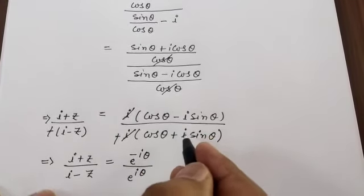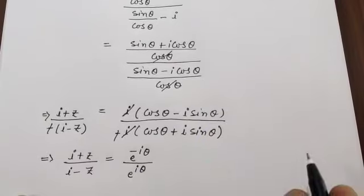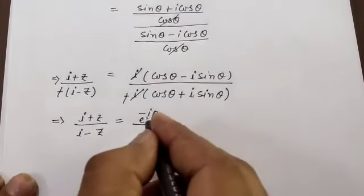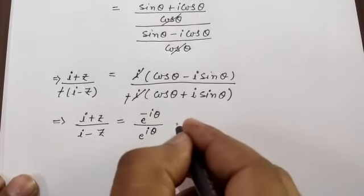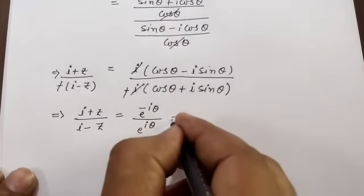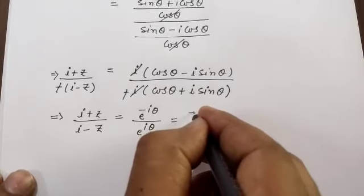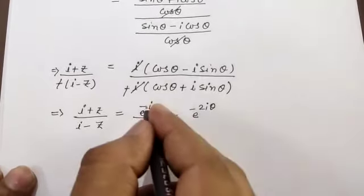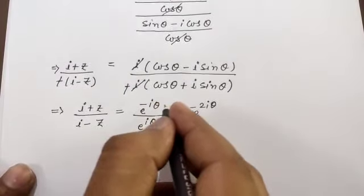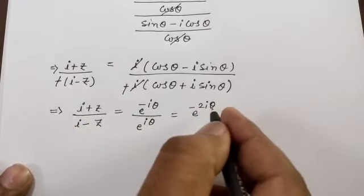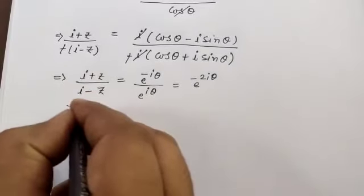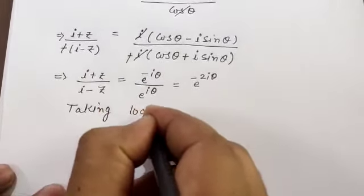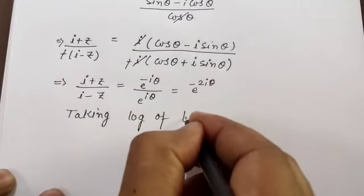Recall that e^(iy) = cos y + i·sin y. This gives us e^(-iθ) / e^(iθ) = e^(-2iθ). So (i+z)/(i-z) = e^(-2iθ). Now taking log of both sides.